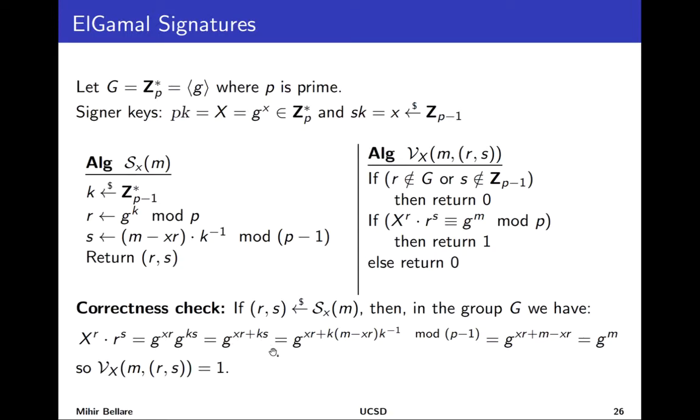And now substitute the value of s from this equation. So you get k times (m - xr) times k^(-1). The k and the k inverse cancel each other. Remember that in the exponents we work mod p minus 1 because in the exponent space everything is modulo the group order. So when this is gone you get xr + m - xr which is g^m. And that means verification succeeds because that's what we had to get. So it's worth checking that you see how all that evolves. That you understand the difference between p and p minus 1 where one is used versus the other and so forth.